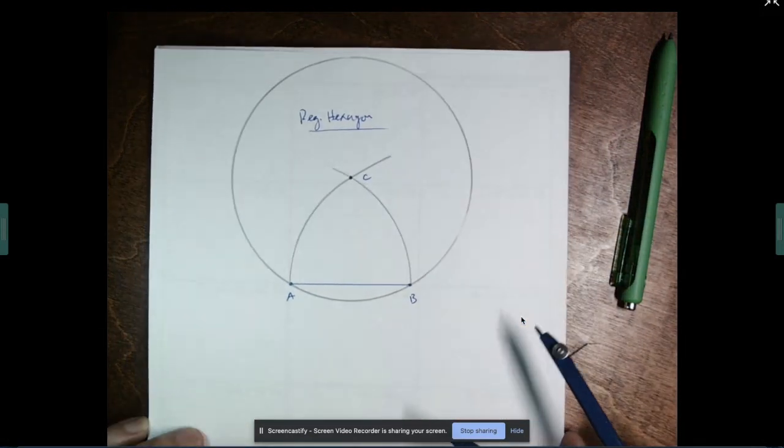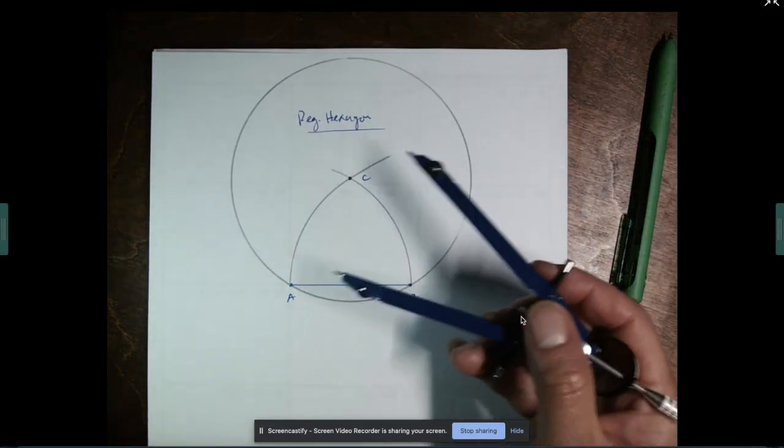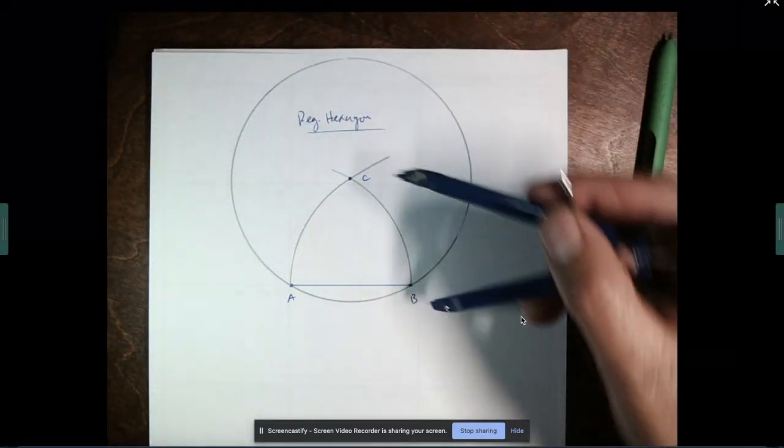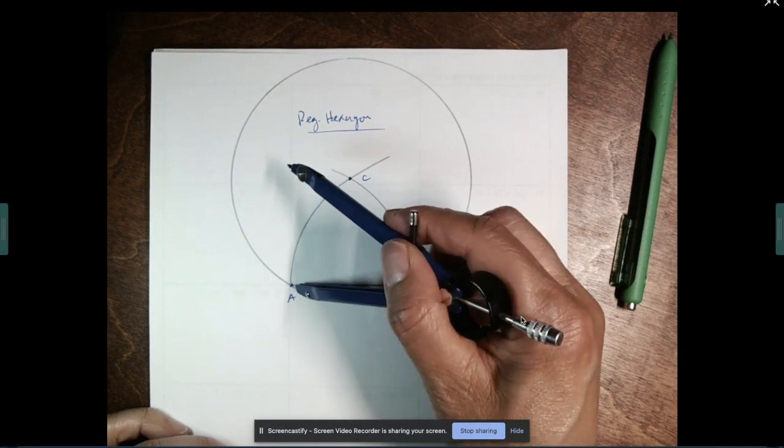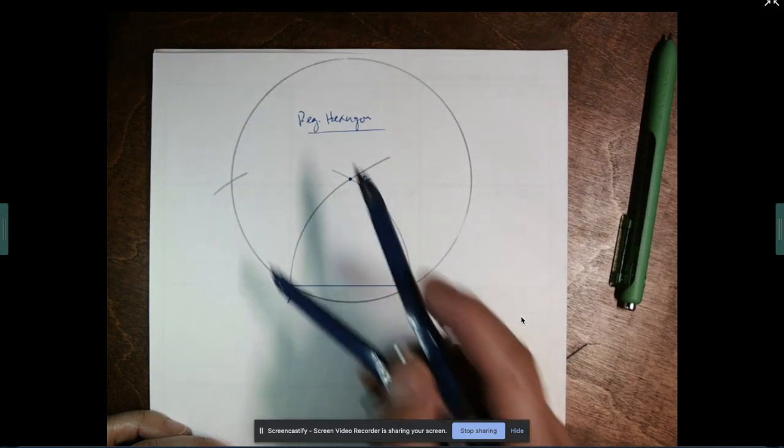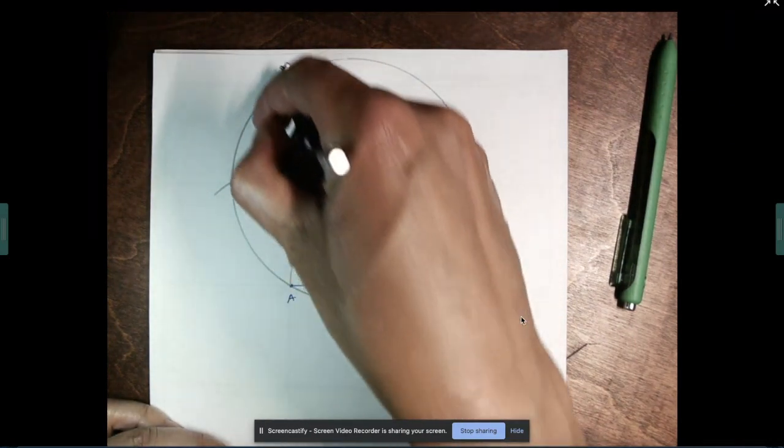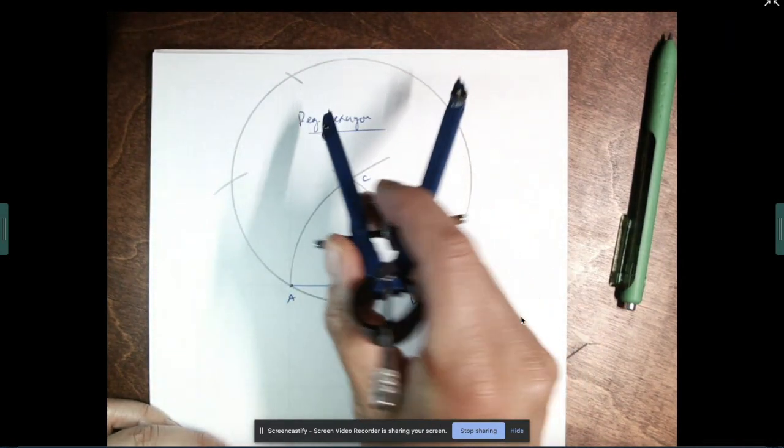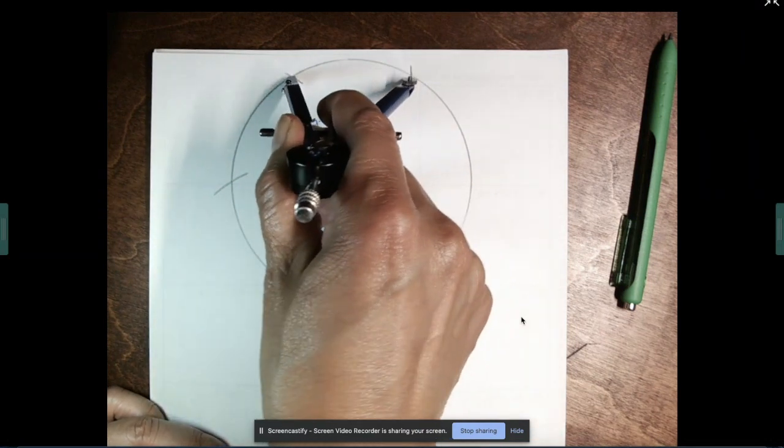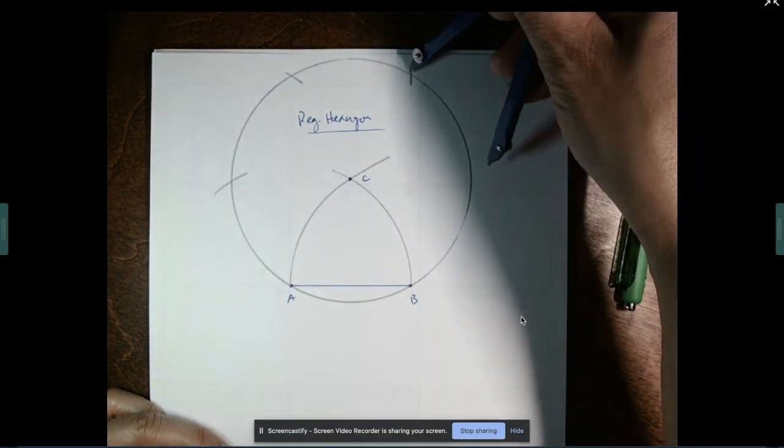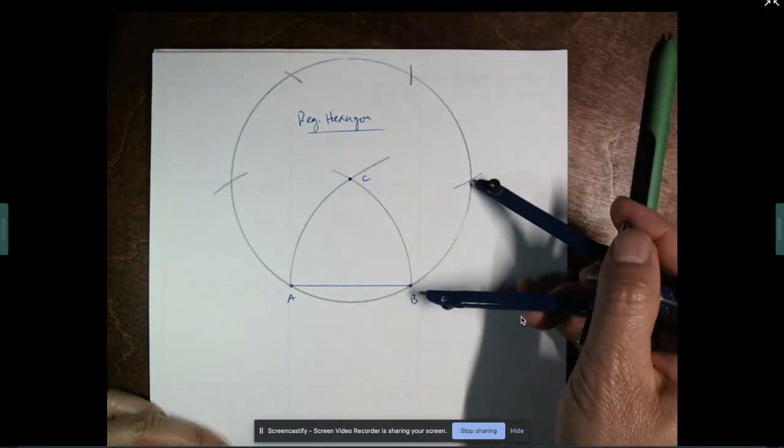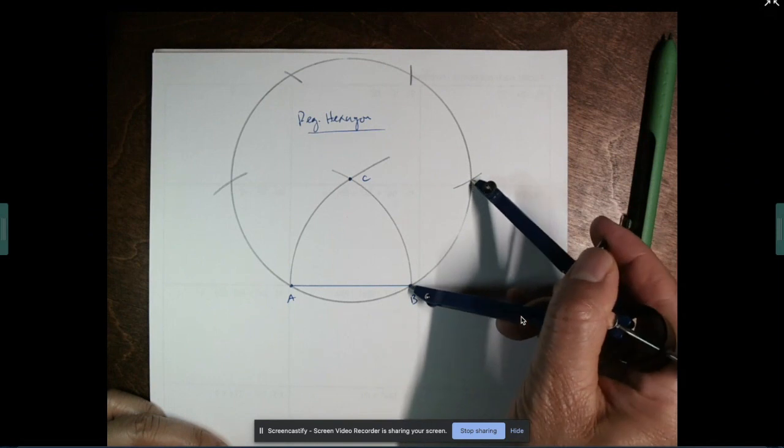So there's my circle. And I don't have to do anything to my compass. I'm going to keep it this same radius, this same side length. And now I'm just going to put my compass on point A and make an arc. Put my compass on that intersection and make an arc. Put my compass on that intersection point and make an arc. And put my compass on that intersection point and make an arc. This last arc I don't have to make, but I can just check it. Yes, that's correct.